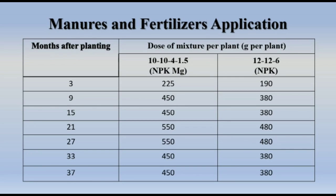Manure and fertilizer application schedule (NPK+Mg mixture per plant): At 3 months after planting — to 225:190; at 9 months — 450:380; at 15 months — 450:380; at 21 months — 550:480; at 27 months — 550:480; at 33 months — 450:380; at 37 months — 450:380.